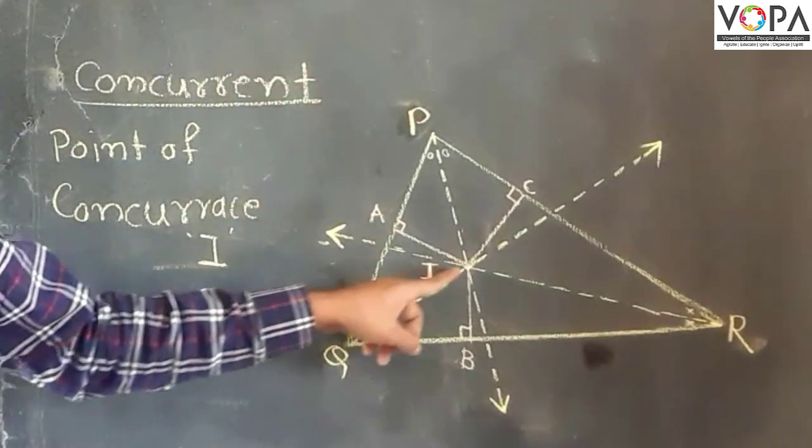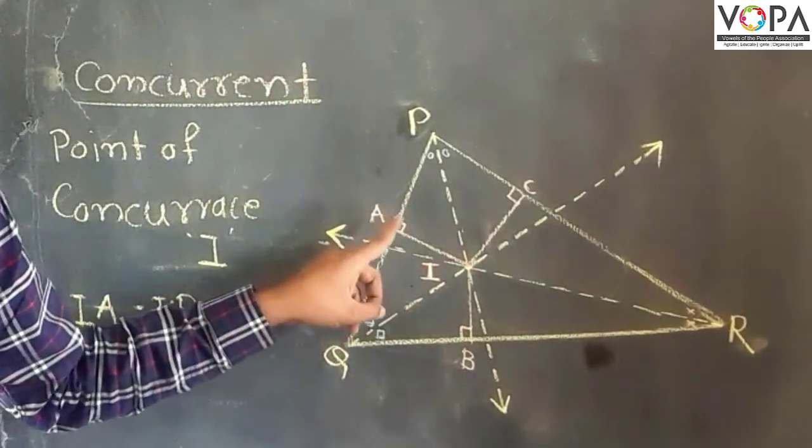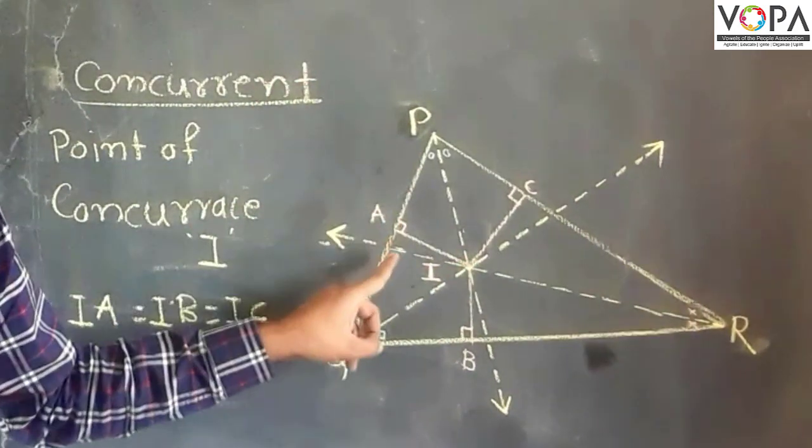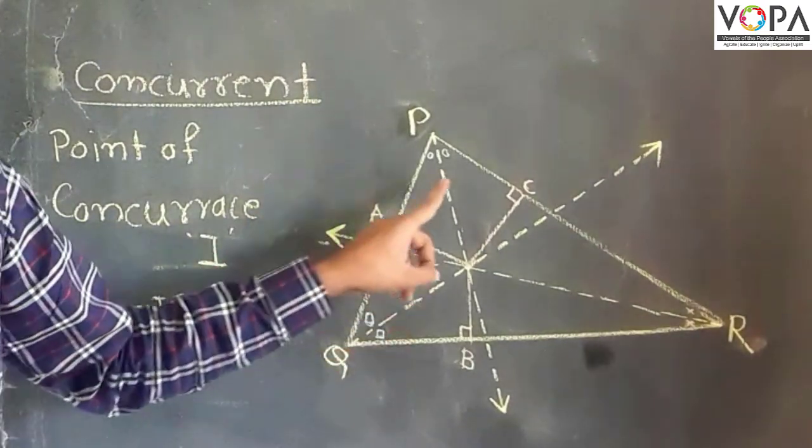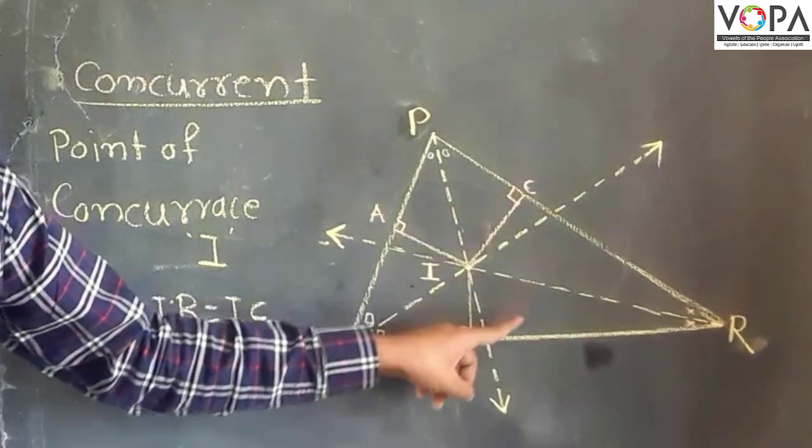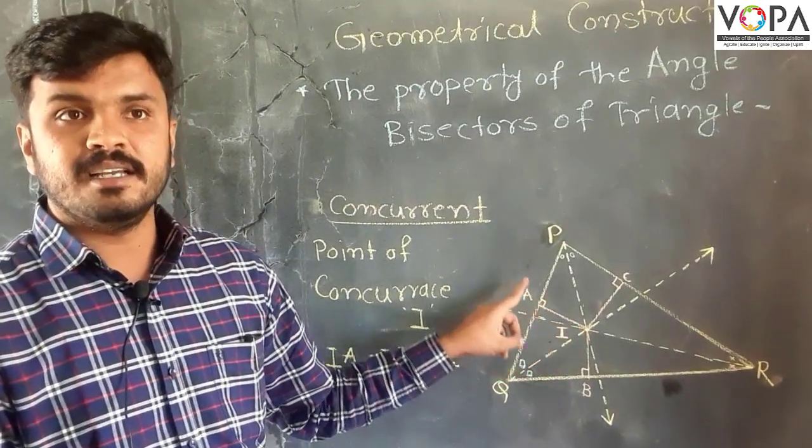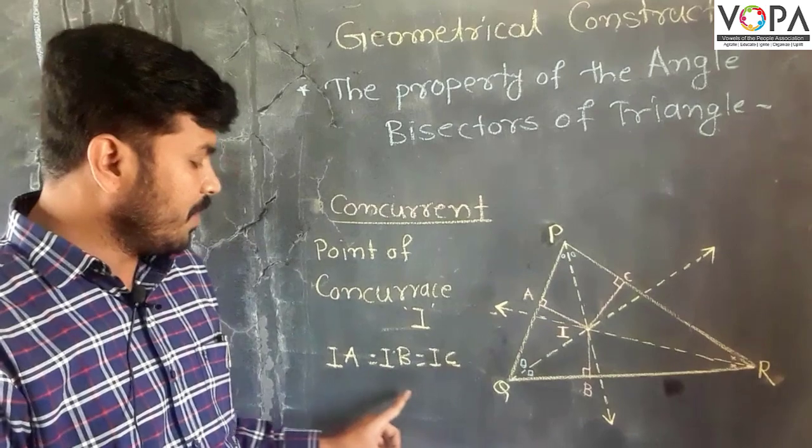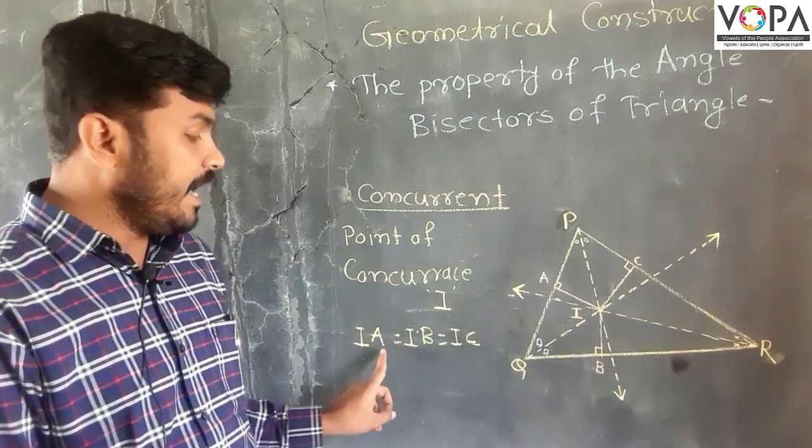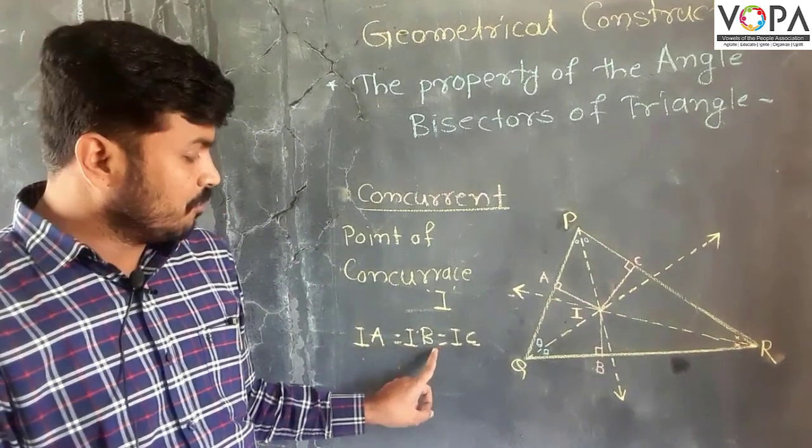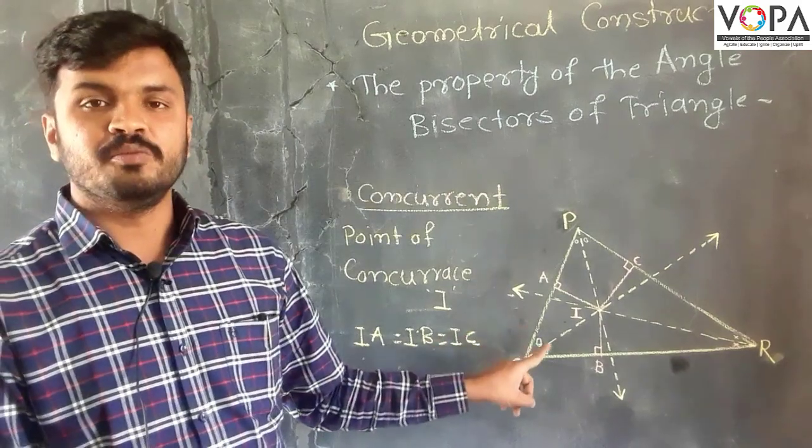The main property of the angle bisectors of the triangle is that the perpendiculars drawn to the sides are equal in measure. That is, IA equals IB equals IC. You can verify this yourself. Thank you.